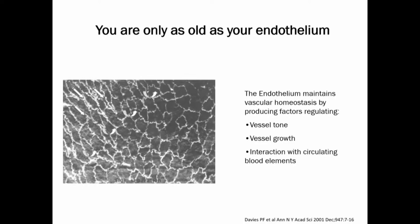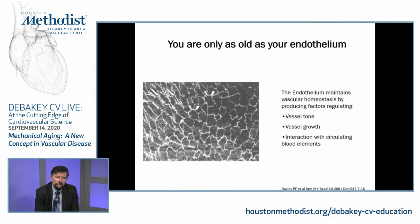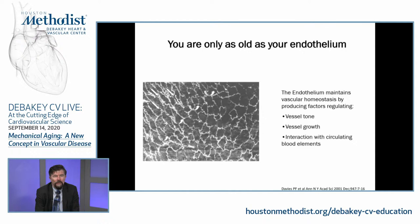The endothelium secretes a panoply of paracrine factors such as nitric oxide and prostacycline that can relax the blood vessel, prevent vascular smooth muscle cells from proliferating too much, and prevent adhesion of platelets and leukocytes to the vessel wall. Nitric oxide and prostacycline are paradigmatic of the paracrine factors the endothelium makes to protect us. Essentially the endothelium is a bit like Teflon, but as we age, it becomes more like Velcro.